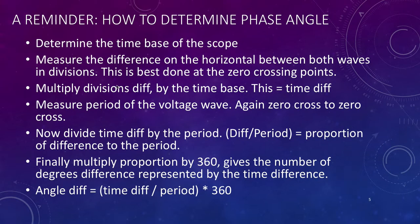Just a reminder, if you need to use the scope to measure the phase angle: determine the time base of the scope, measuring in two milliseconds per division or five or ten, whatever it happens to be. Measure the difference on the horizontal between both waves in divisions. This is best done at the zero crossing points. Then multiply the divisions difference by the time base. This gives you the time difference. Then measure the period of one of the waves, normally the voltage wave, again at the zero crossing points. This gives you the period.